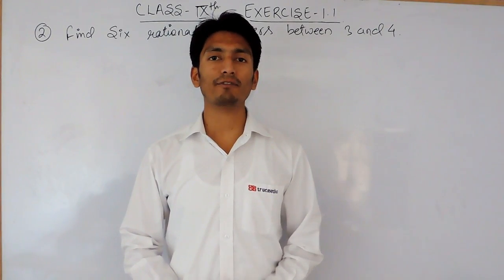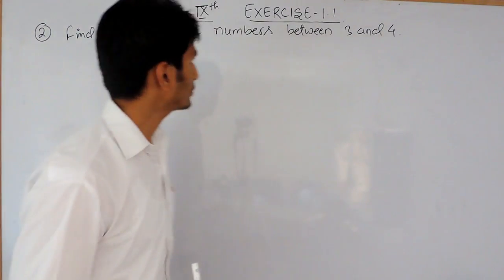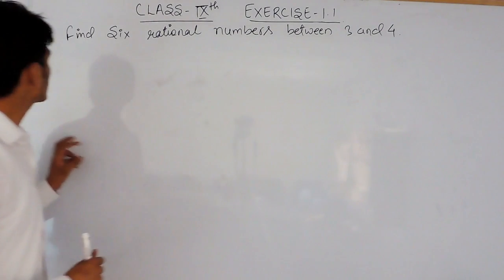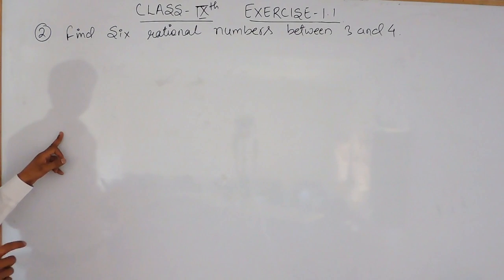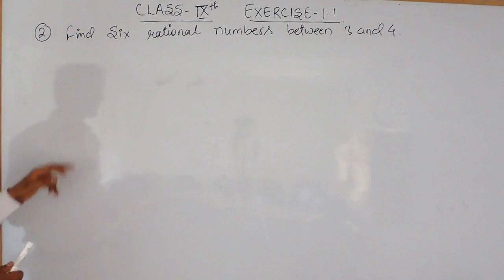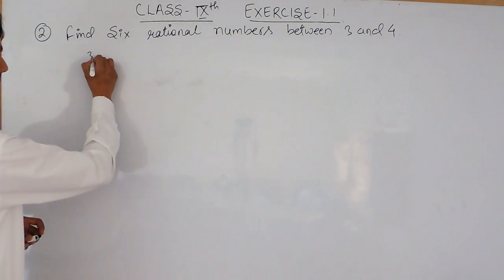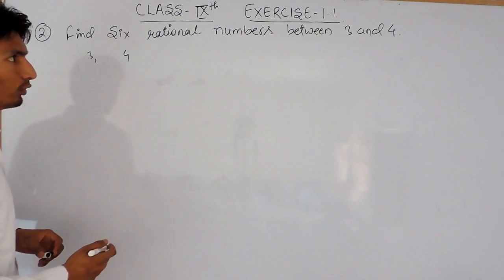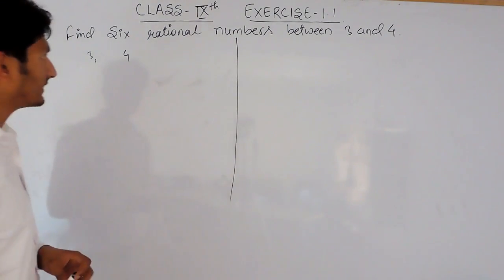Hello everyone, we are from True Maths and in this video we are going to solve question number 2 of exercise 1.1. In this question you have to find 6 rational numbers between 3 and 4. There are two methods of solving this.